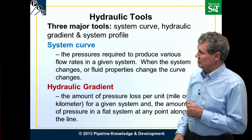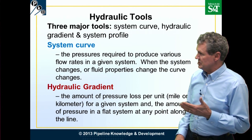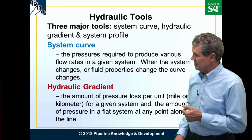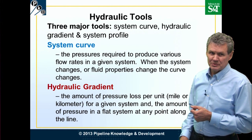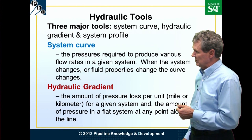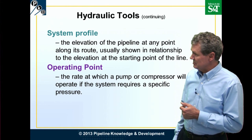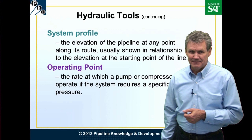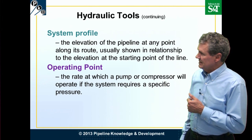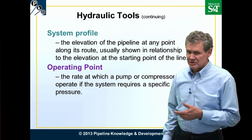When it comes to hydraulic tools, I'm going to talk about three major ones. The systems curve, which shows us the pressure required to produce various flow rates for a particular system. The hydraulic gradient, which is the amount of pressure loss per mile for any given system, and also shows us the pressure at any point along the line, or combined with the hydraulic profile to show us pressure in the pipeline. And the operating point — the rate at which the pump or compressor is going to operate if the system requires a specific pressure.